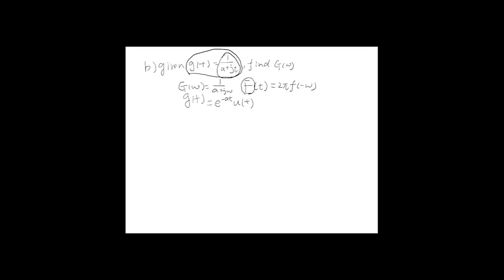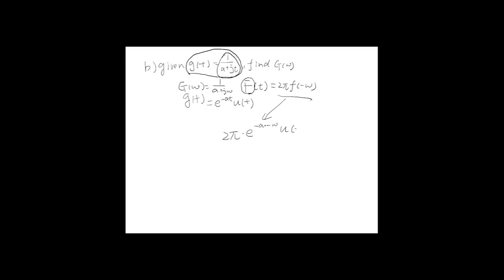So we can solve this part easily by just plugging in. We see that this g(t) equals 1 over (a plus j·t). So by the duality property, the Fourier transform F(omega) equals 2·pi times e to the a·omega times u(negative omega). This equals 2·pi·e to the a·omega times u(negative omega).